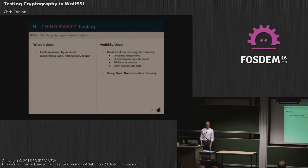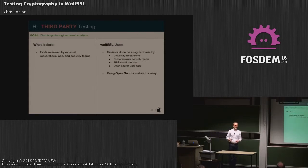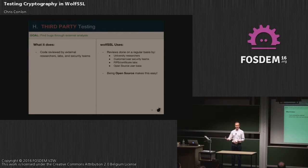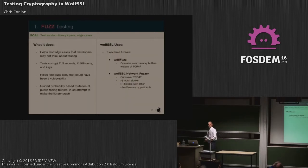Next up is third-party testing, which is different from interop testing. This involves external parties — security researchers, customers, and user labs — analyzing and looking at our code base. We've had teams from Google and Intel look at us; Intel has gone through almost line by line. We've done our FIPS testing, which is an external review. We also regularly have university researchers and people working on theses or doctorate work look at us and submit comments and feedback. Being open source makes this easy because anyone can analyze it and give suggestions.